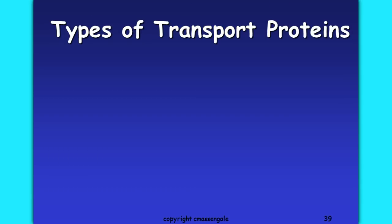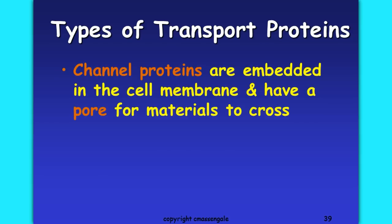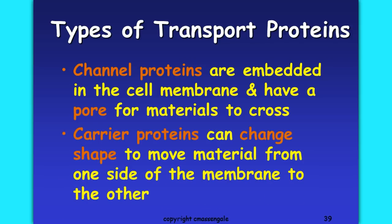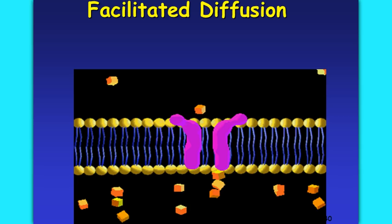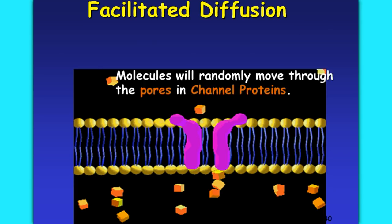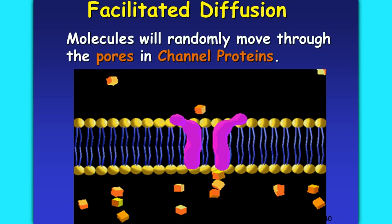Let's look at the different types of transport proteins. Channel proteins are those embedded in the cell membrane that have a pore for materials to cross. Carrier proteins can change shape to move material from one side of the membrane to the other. With facilitated diffusion, these channel proteins provide a passageway for molecules too large to pass through the phospholipids to get into the cell.